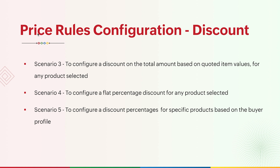Now let's look at configuring discounts over products selected using price rules. At Core Electronics, the sales tax on products is completely waived off if the account falls under a nonprofit industry sector. With so many other things to keep track of — such as the country the account is from or whether they are a first-time buyer or have a history of purchase — this factor of industry is often overlooked. Additionally, if any product is added to the quote and the buyer is a first-time buyer and the total purchase exceeds $1,500, a flat discount of 10% is supposed to be provided. All of this comes under configuring a discount on any product that is selected. Let's look at how that can be done using price rules.